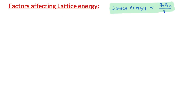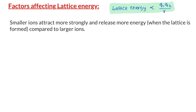According to the formula, lattice energy decreases when the distance between the cation and anion increases. In other words, smaller ions attract more strongly and release more energy when the lattice is formed, compared to larger ions.